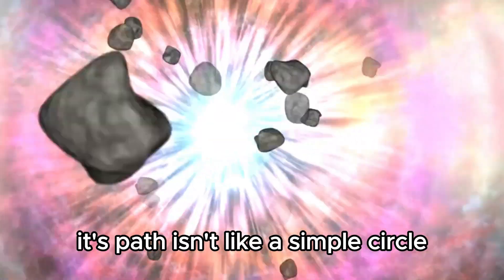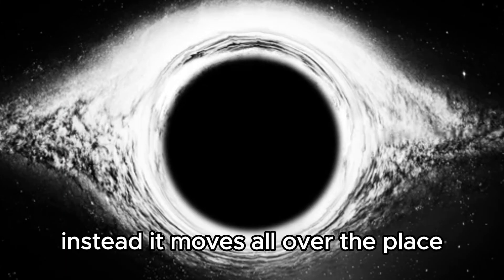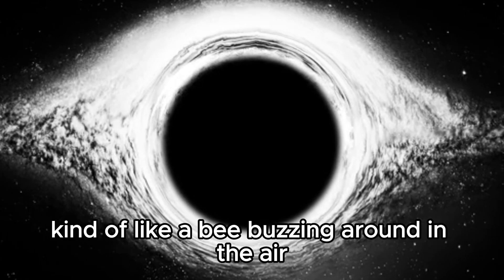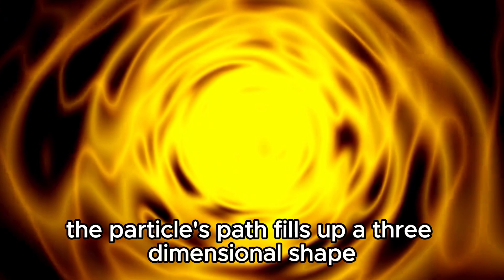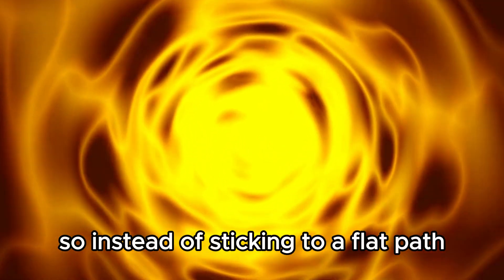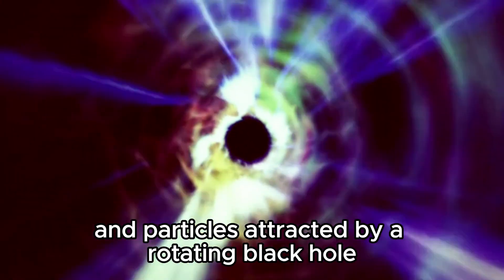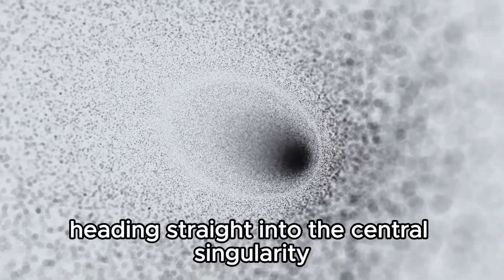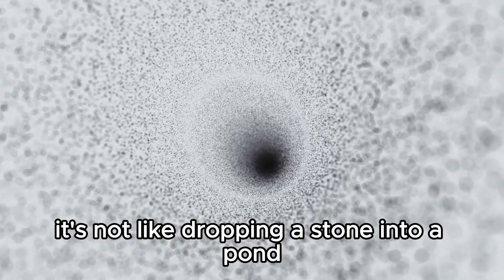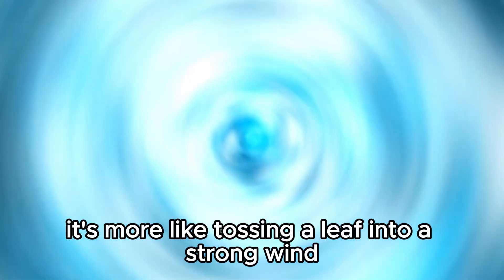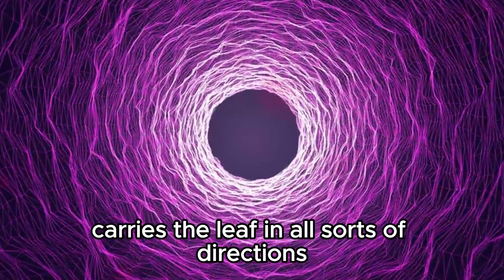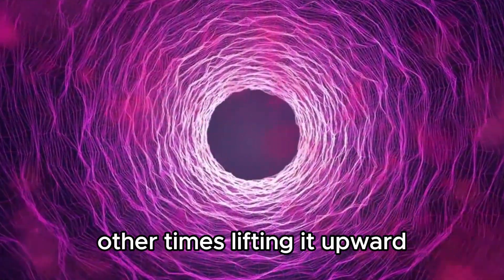And so, if matter falls into a black hole along this perplexing path, its path isn't like a simple circle that stays in one plane. Instead, it moves all over the place, kind of like a bee buzzing around in the air. Over time, the particle's path fills up a three-dimensional shape. So instead of sticking to a flat path, particles around spinning black holes move in all directions, painting a kind of donut shape in space. And particles attracted by a rotating black hole won't just cross the event horizon, heading straight into the central singularity. It's not like dropping a stone into a pond where it sinks straight to the bottom. Instead, it's more like tossing a leaf into a strong wind. The wind's swirling motion carries the leaf in all sorts of directions, sometimes pushing it closer to the ground, other times lifting it upward.